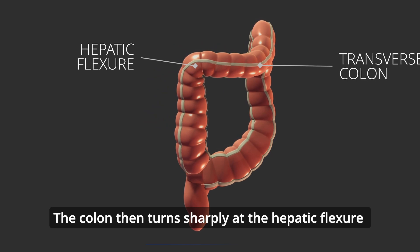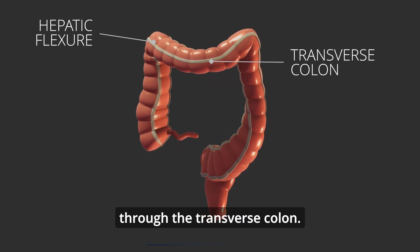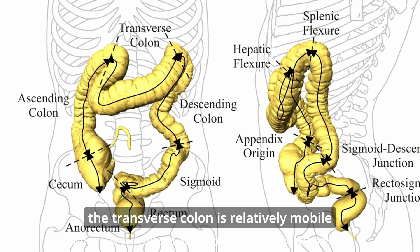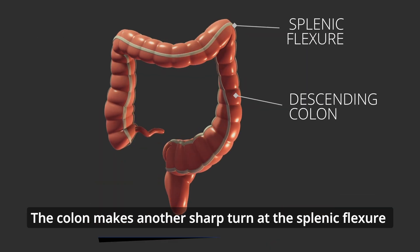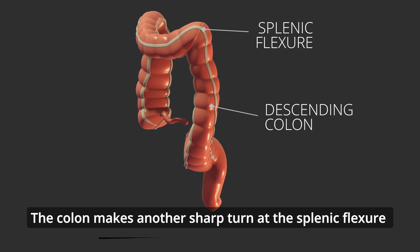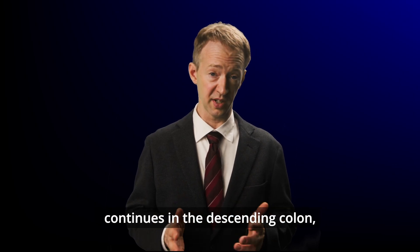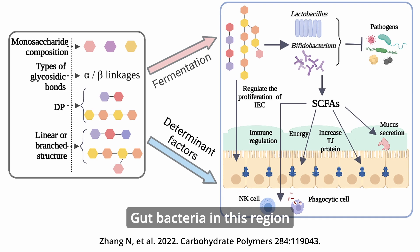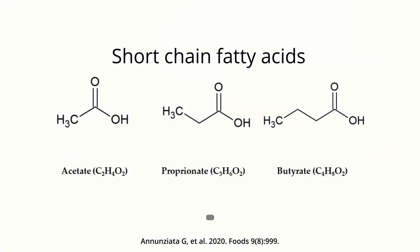The colon then turns sharply at the hepatic flexure and moves from right to left across the body through the transverse colon. Unlike the ascending and descending colon, the transverse colon is relatively mobile and attaches to the posterior abdominal wall through the transverse mesocolon. The colon makes another sharp turn at the splenic flexure and heads downward through the descending colon, where absorption of water and electrolytes continues. This region also stores accumulating fecal material, and good bacteria play an important role in fermentation of carbohydrates, releasing short-chain fatty acids and gas byproducts.